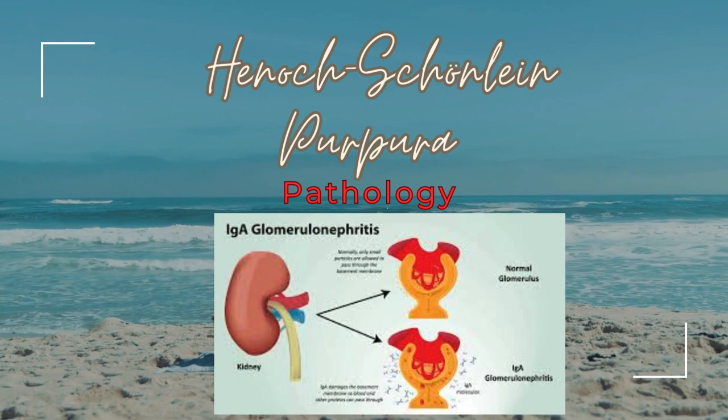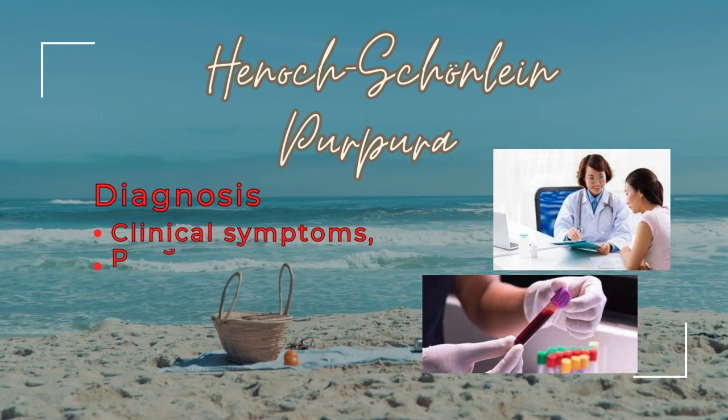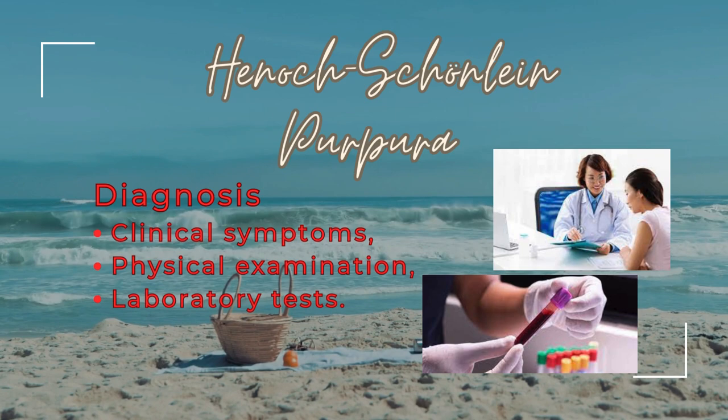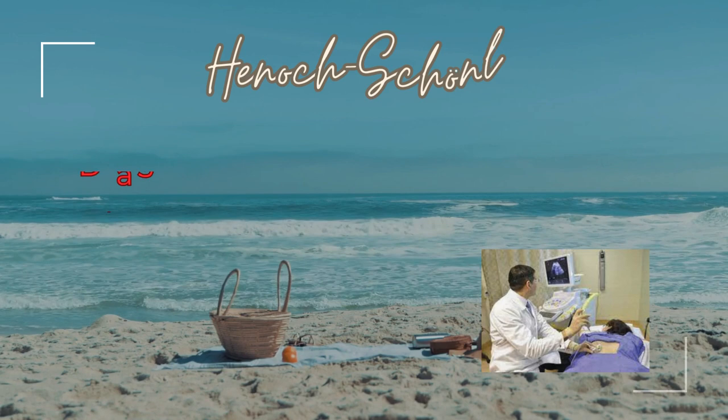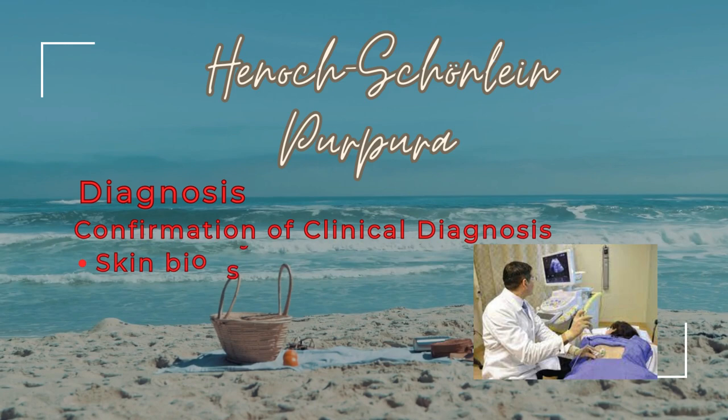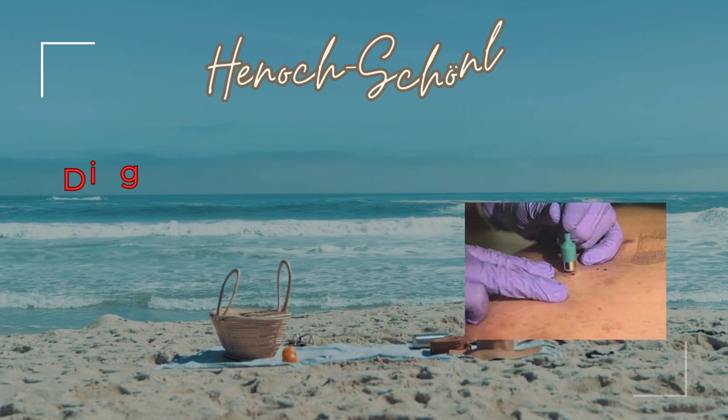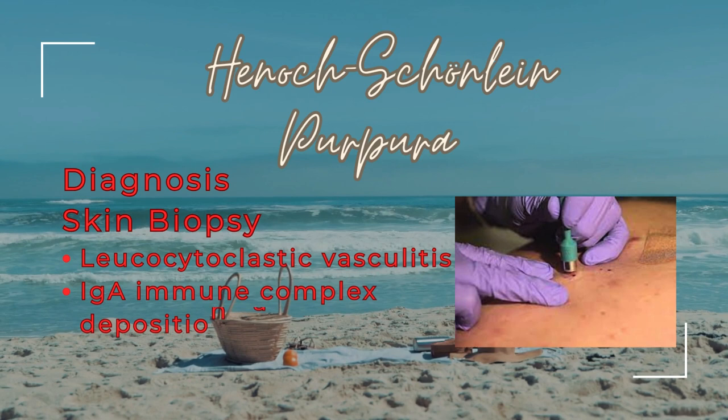Diagnosis is mostly made on the basis of clinical symptoms and physical examination. Laboratory tests like serum creatinine and urine dipstick may help identify nephritis. Serum IgA levels may be checked. Confirmation of the clinical diagnosis of Henoch-Schönlein Purpura is made by skin biopsy or kidney biopsy. Skin biopsy shows leukocytoclastic vasculitis, and IgA immune complex deposition can be seen using immunofluorescence staining.